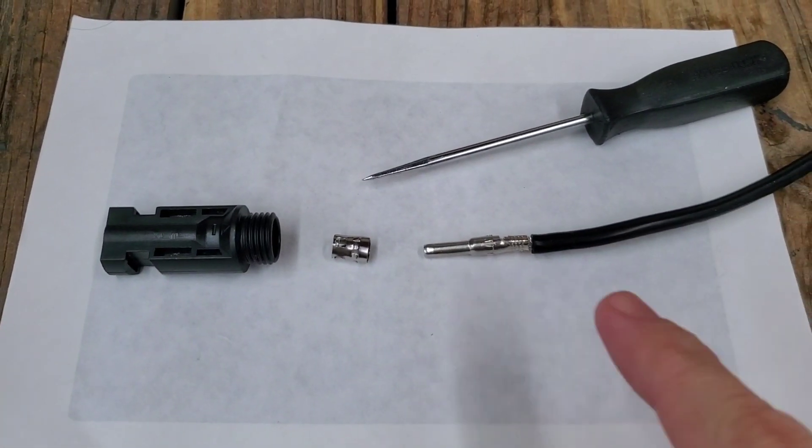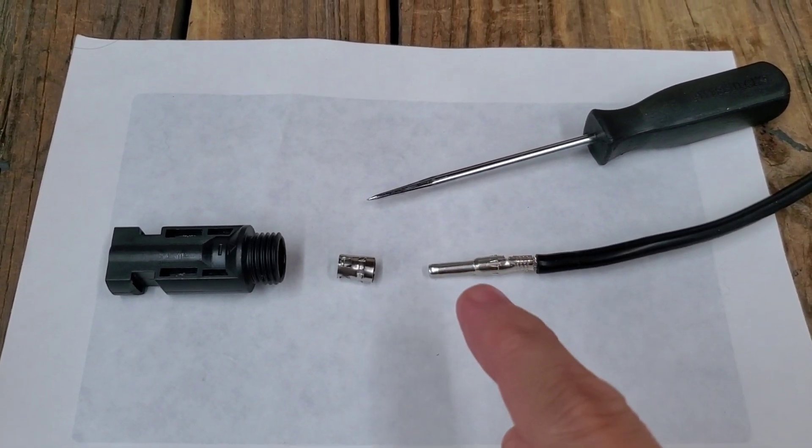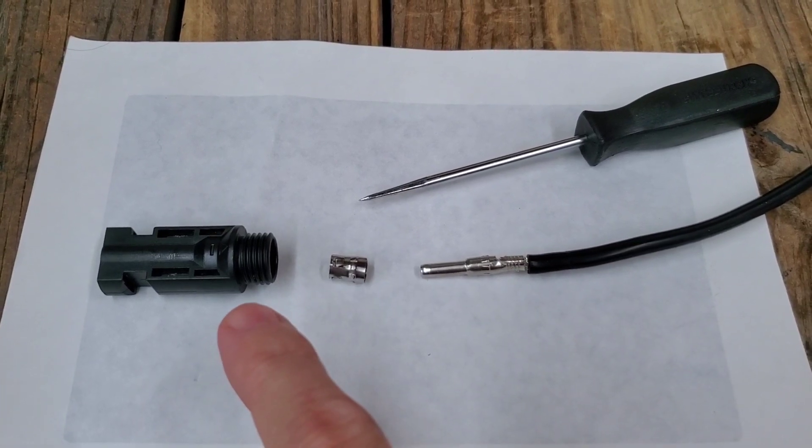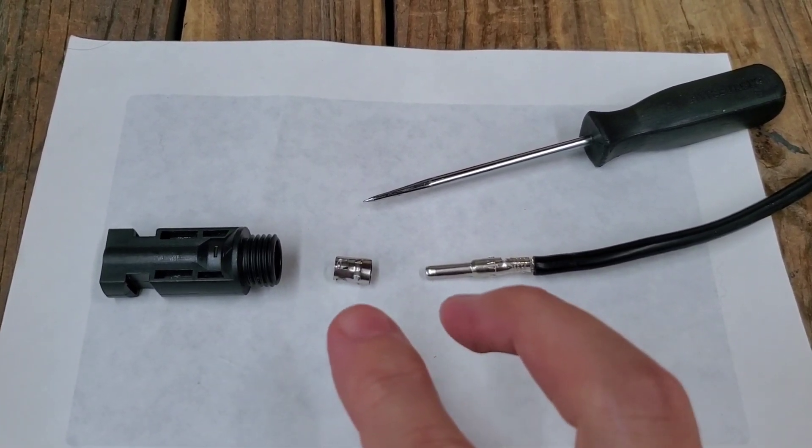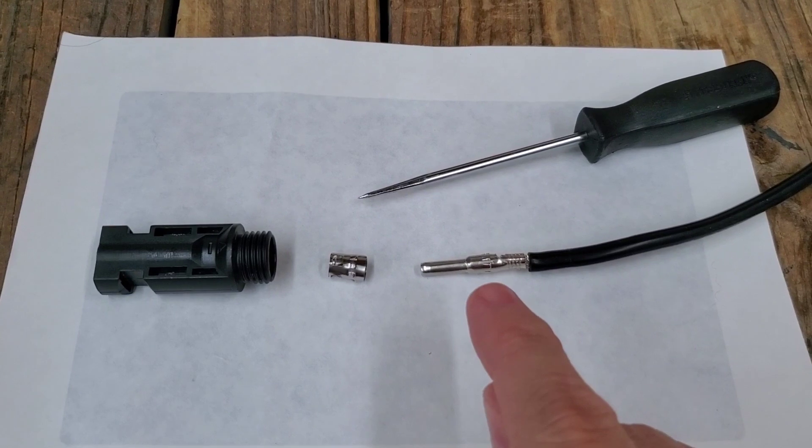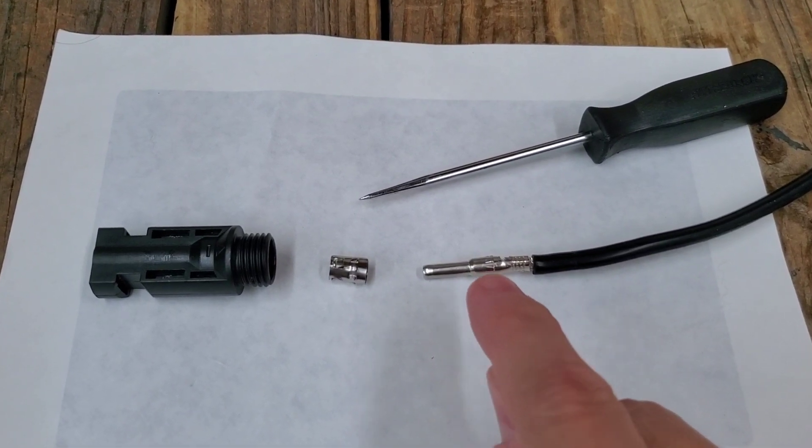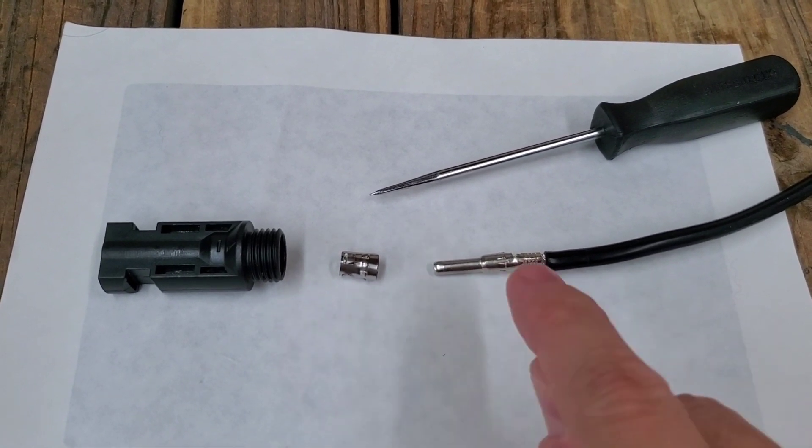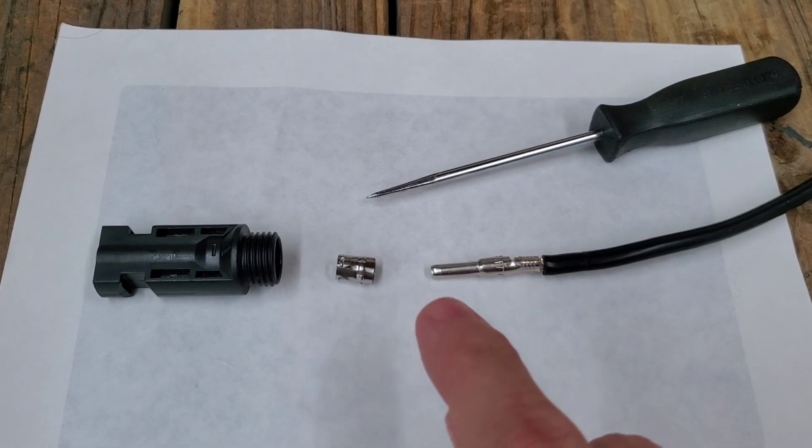Just wanted to make a quick video on how to remove the pin from an MC4 connector. I'm not aware of a tool that releases the pin from this sleeve to come out. It's a pretty tight fit.